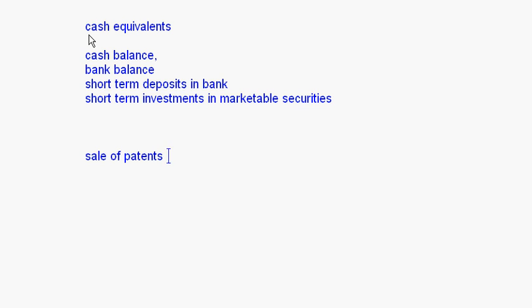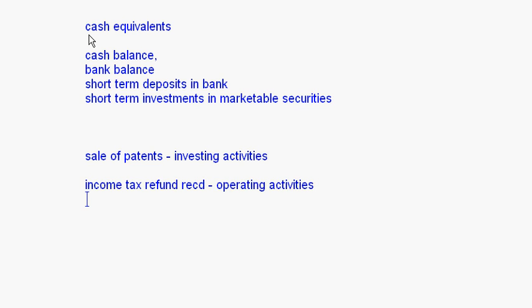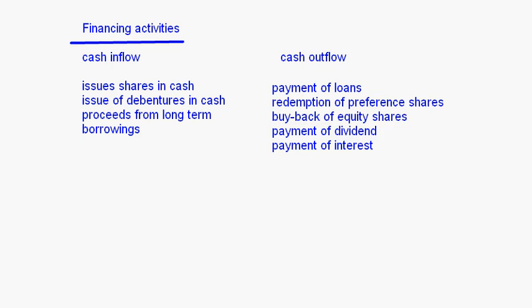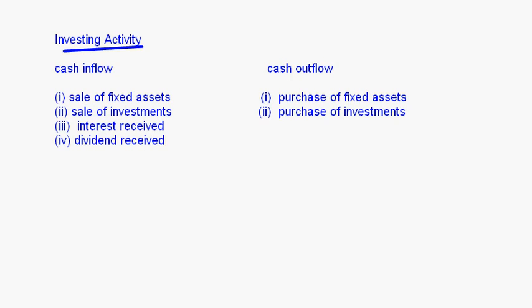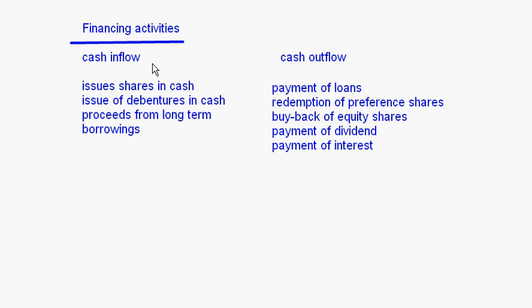Sale of patents comes under investing activities. Income tax refund received comes under operating activities. When we do questions on this lesson, we will take up all the items and understand which item is to be put in which activity. In our next session, we will take up questions on identifying different transactions and also a question on operating activities.